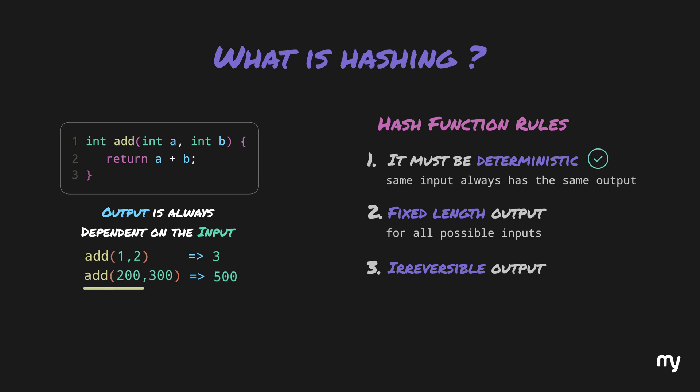Now, if we pass 200 and 300 to the function, the output will be 500. No matter how many times we pass these two values, the output will always be 500. However, the length of the output does change depending on different inputs. In the first case, the output was 3, which is only 1 digit, so the length is 1. But in the second case, the output was 500, which are 3 digits, so the length is 3.